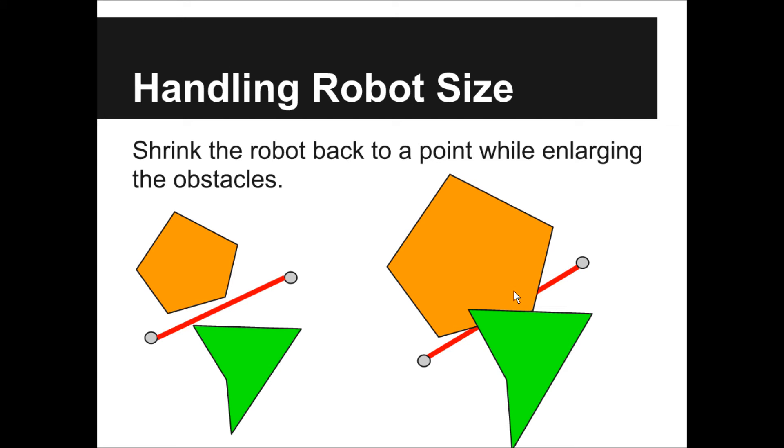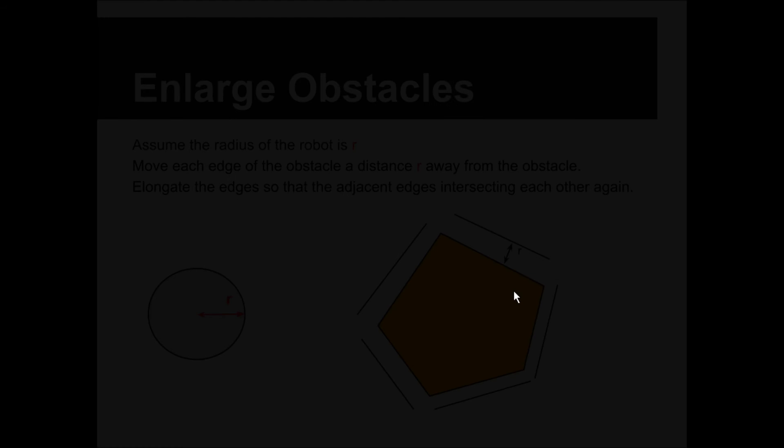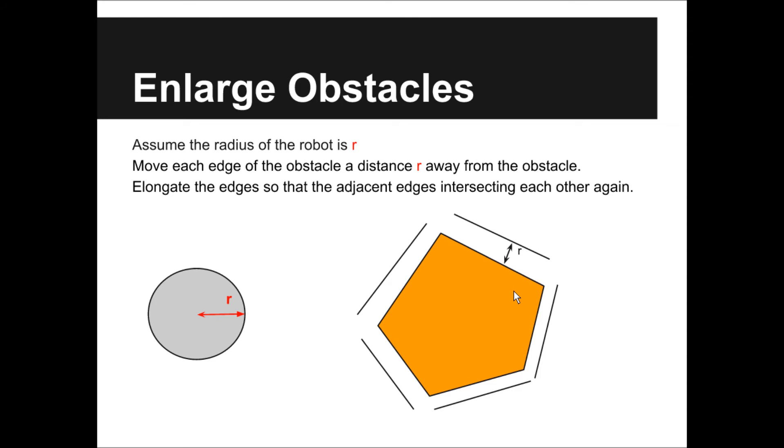Next, I will talk about how to enlarge the obstacles. We approximate our robot as a disk. Assume the radius of the robot is R. First step is to move each edge of the obstacle a distance R away. Then, there is a gap between the edges. Second step is to elongate the edges so that adjacent edges intersect each other.